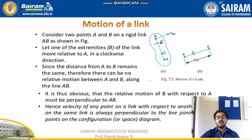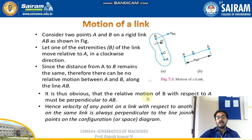Consider two points A and B on a rigid link AB. Let one extremity, point B, move relative to A in the clockwise direction. Since the distance from A to B remains the same, there cannot be any relative motion between A and B along the line AB. Therefore, the relative motion of B with respect to A must be perpendicular to AB. Hence, the velocity of any point on a link with respect to another point on the same link is always perpendicular to the line joining these points on the configuration diagram.